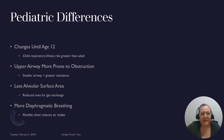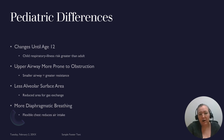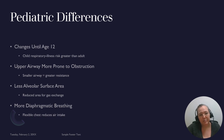Younger children breathe more with their diaphragm and have a flexible chest, so you'll see their cartilage and bone retract more than on an adult. An adult's chest wall is stiffer, so during breathing difficulties you don't see as much retraction. With a flexible chest wall, children have to work harder to get a breath in because the wall works against them as they try to take a full deep breath.